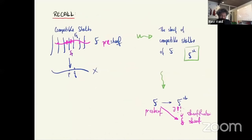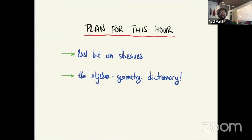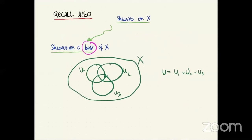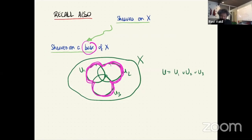Just to make sure we're on the same page: I was reviewing compatible stalks and how to think of them, and how we get sheafification from that. Now we're talking about sheaves on a base. The idea is that if you have a base on the topology and you only know the information about the sheaf on the open sets appearing in that base, you still know the sections and restriction maps. For example, if U1 through U3 are open sets in the base, dealing with their union — you just need sections over U1, U2, U3 and have them agree on the overlaps.